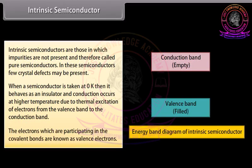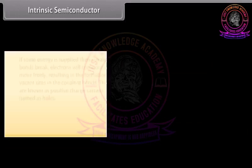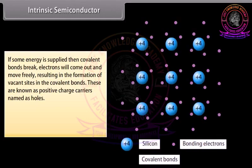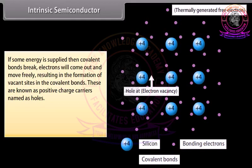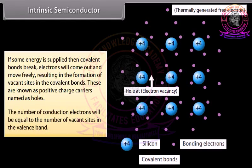In order to gain stability, silicon has to make four covalent bonds. The electrons participating in the covalent bonds are known as valence electrons. If some energy is supplied, then the covalent bonds break. Electrons come out and move freely, resulting in the formation of vacant sites in the covalent bonds. These are known as positive charge carriers, named as holes. The number of conduction electrons will be equal to the number of vacant sites in the valence band.